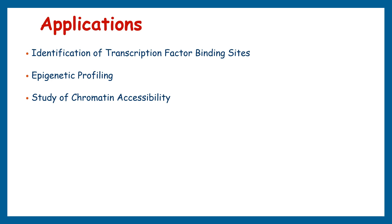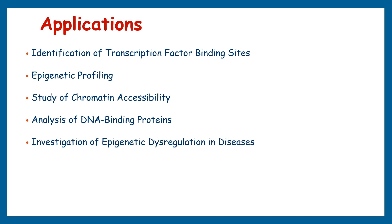This information aids in understanding the 3D organization of chromatin and how it influences gene expression. Beyond transcription factors, ChIP sequencing can be employed to study the interaction of various DNA-binding proteins such as chromatin remodelers, insulator proteins, and RNA polymerase complexes, shedding light on the roles these proteins play in gene regulation and chromatin structure. ChIP sequencing has also been instrumental in uncovering epigenetic changes associated with diseases like cancer, allowing comparison of ChIP-seq profiles between normal and diseased cells to understand how aberrant epigenetic regulation contributes to disease development and progression.